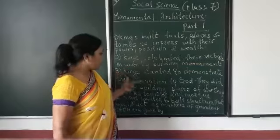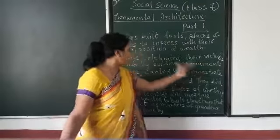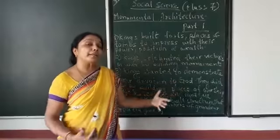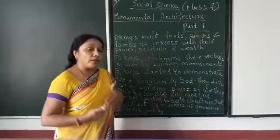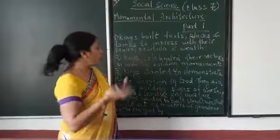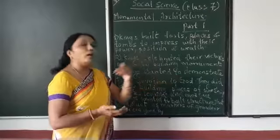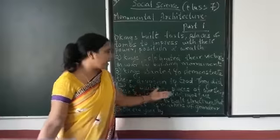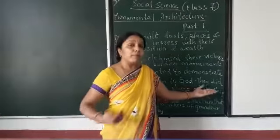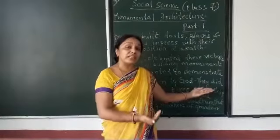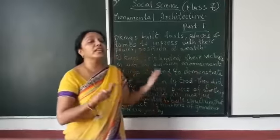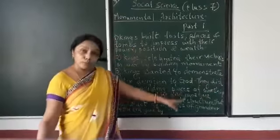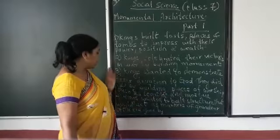Third, kings wanted to demonstrate their devotion to God. To show how much faith they had towards God, they built monuments — they did so by building places of worship, such as temples or mosques.